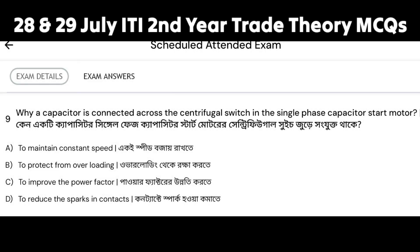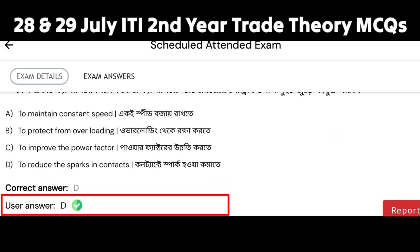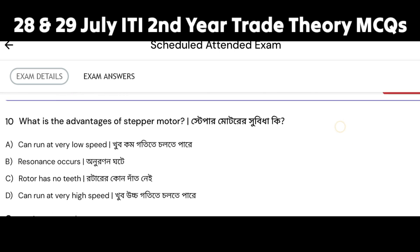Why is a capacitor connected across the centrifugal switch in the single-phase capacitor start motor? The options are: to maintain constant switch, to protect from overloading, to improve the power factor, and to reduce the spark in the contacts. Option D, to reduce the spark in the contacts, is the correct answer.